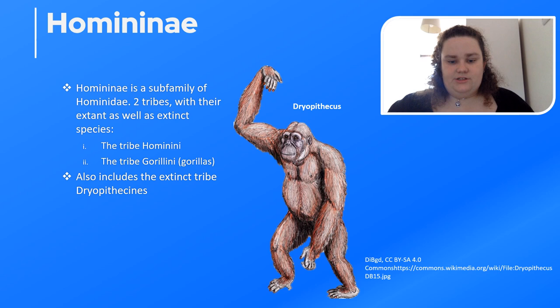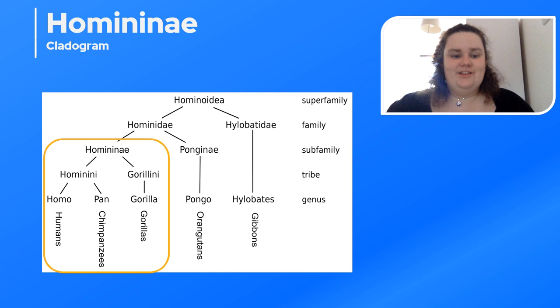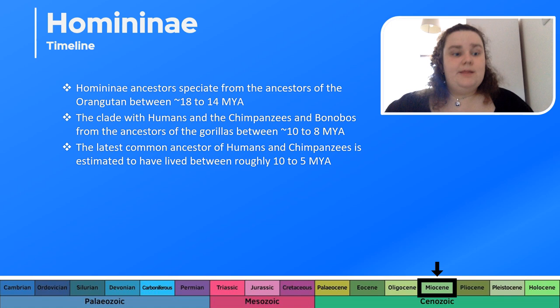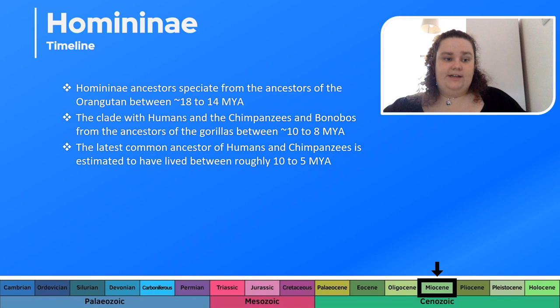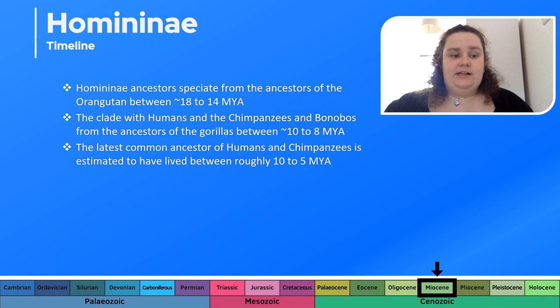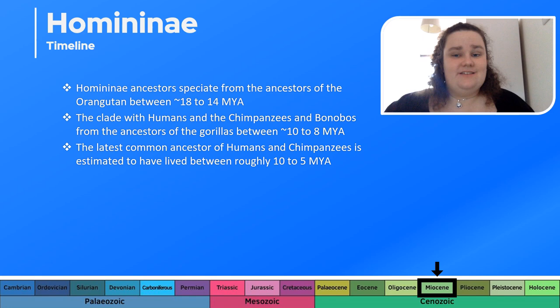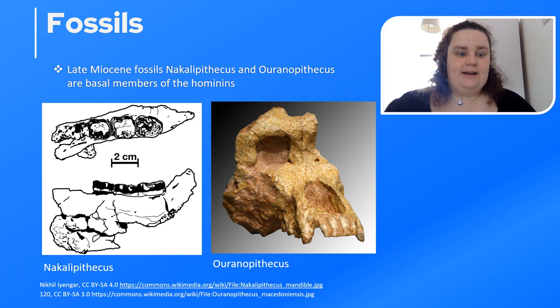Another cladogram focuses on the Homininae, which include the gorillas and Homo. The Homininae timeline: ancestors separate from orangutan ancestors roughly 18 to 14 million years ago during the Miocene. The clade with humans, chimpanzees, and bonobos split from gorilla ancestors roughly 10 to 8 million years ago. The latest common ancestor of humans and chimpanzees is estimated to have lived roughly 10 to 5 million years ago. Late Miocene basal hominins suggest the Homininae diverged from hominids no earlier than 8 million years ago.